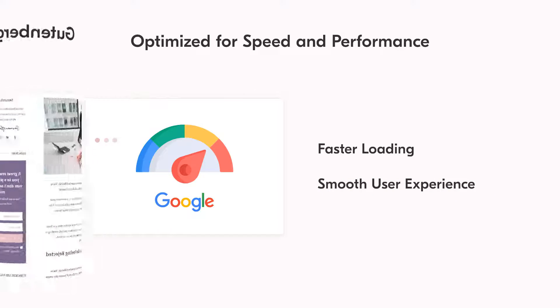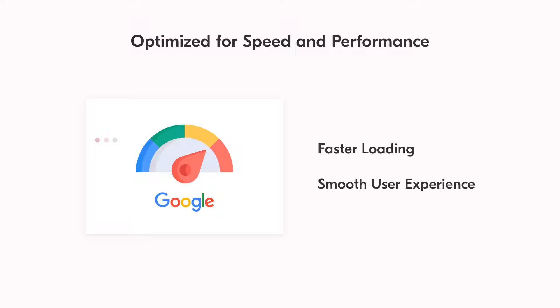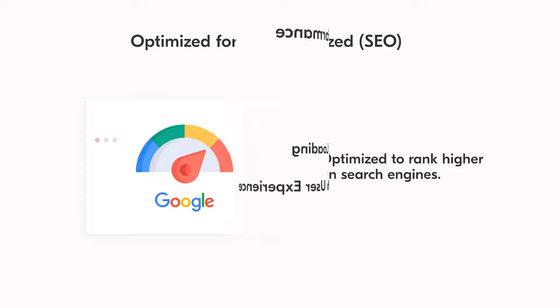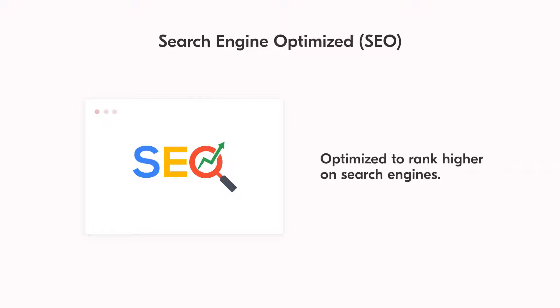The ninth feature is optimization for speed and performance. Fast loading is essential for retaining your audience, and Coach Press Lite comes with speed optimization features that help give you blazing fast loading speeds, resulting in a smooth user experience. The tenth feature is search engine optimization — the majority of websites rely on organic search engine traffic, and this theme comes with an SEO optimized design to give you an edge in your SEO performance.